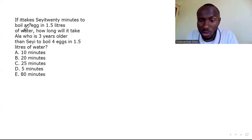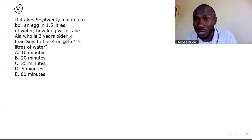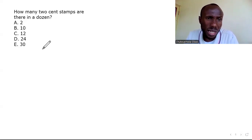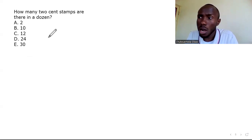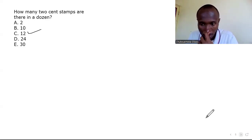Question four: if it takes Shahit 20 minutes to boil an egg in 1.5 liters of water, how long will it take Alloh — who is three years older than Shahit — to boil four eggs in 1.5 liters? Even though Alloh is older, and even if it were five or six eggs, as long as they fit in the container it still takes 20 minutes. Question five: how many two-cent stamps are there in a dozen? Dozen means 12, so the answer is simply 12.